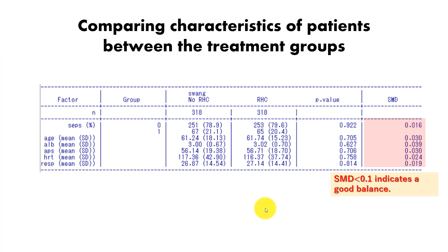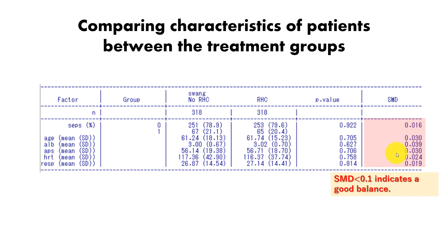EZR also has an option to create a balance comparison table. By matching, the difference between the two treatment groups becomes much smaller. The standardized mean difference (SMD) is less than 0.1, indicating good balance. Later in this video, I will show you what SMD is and how to compute it.